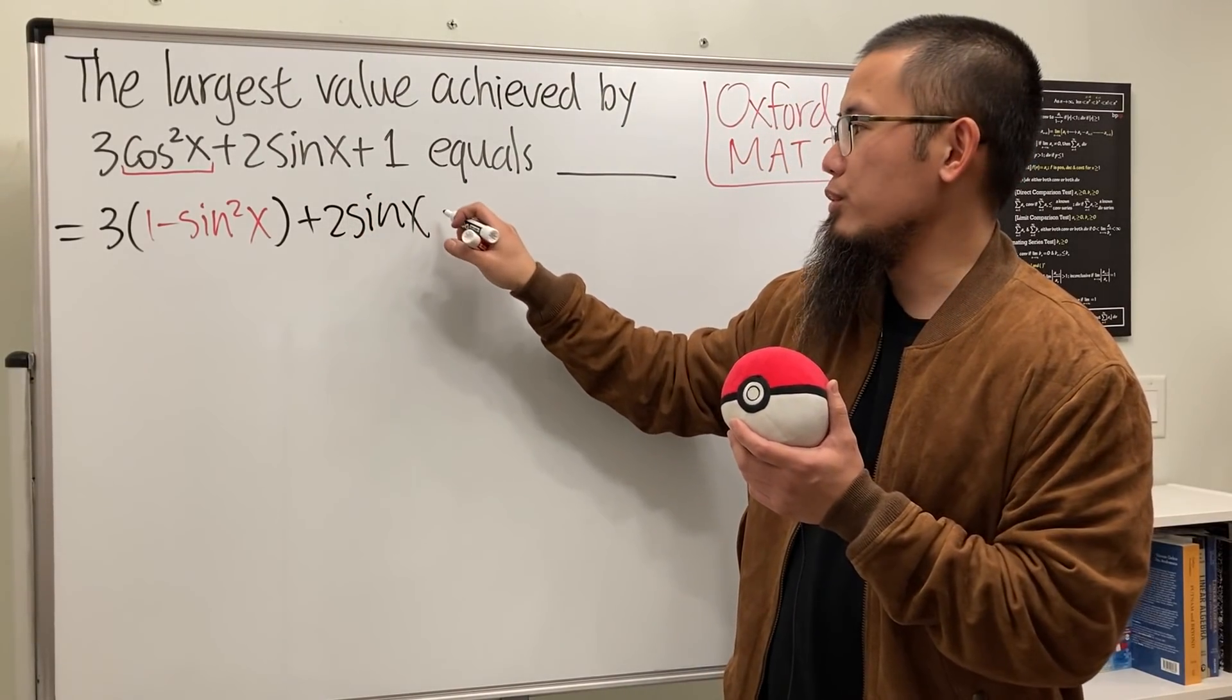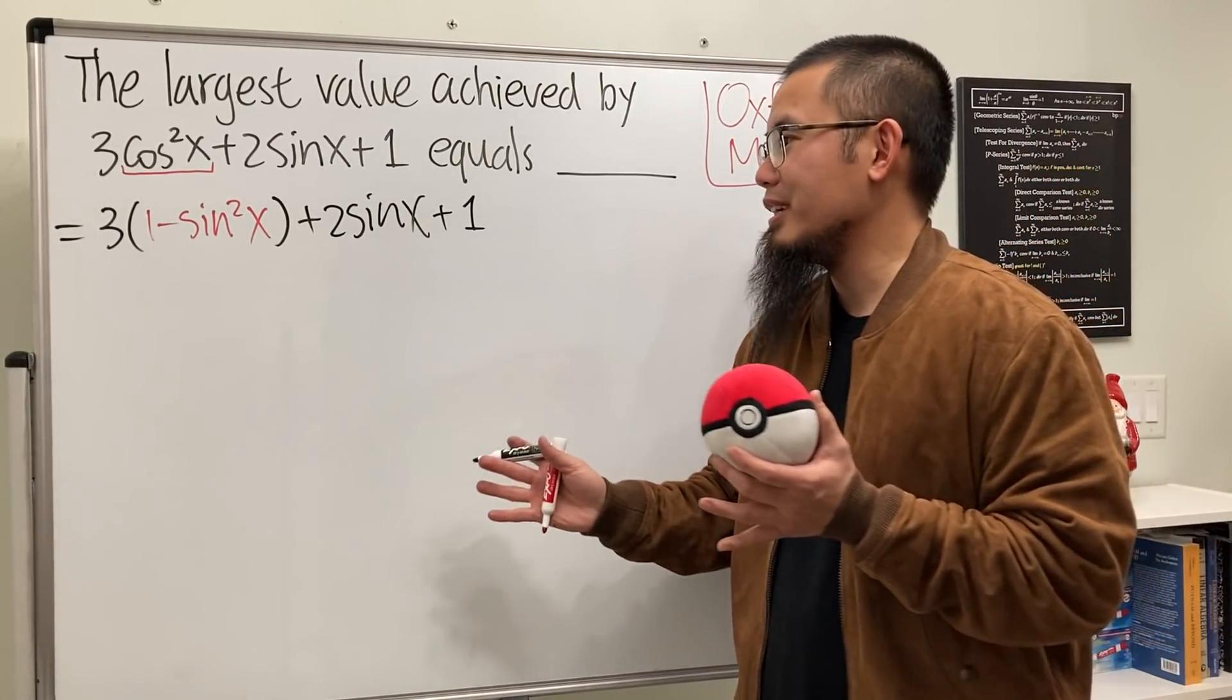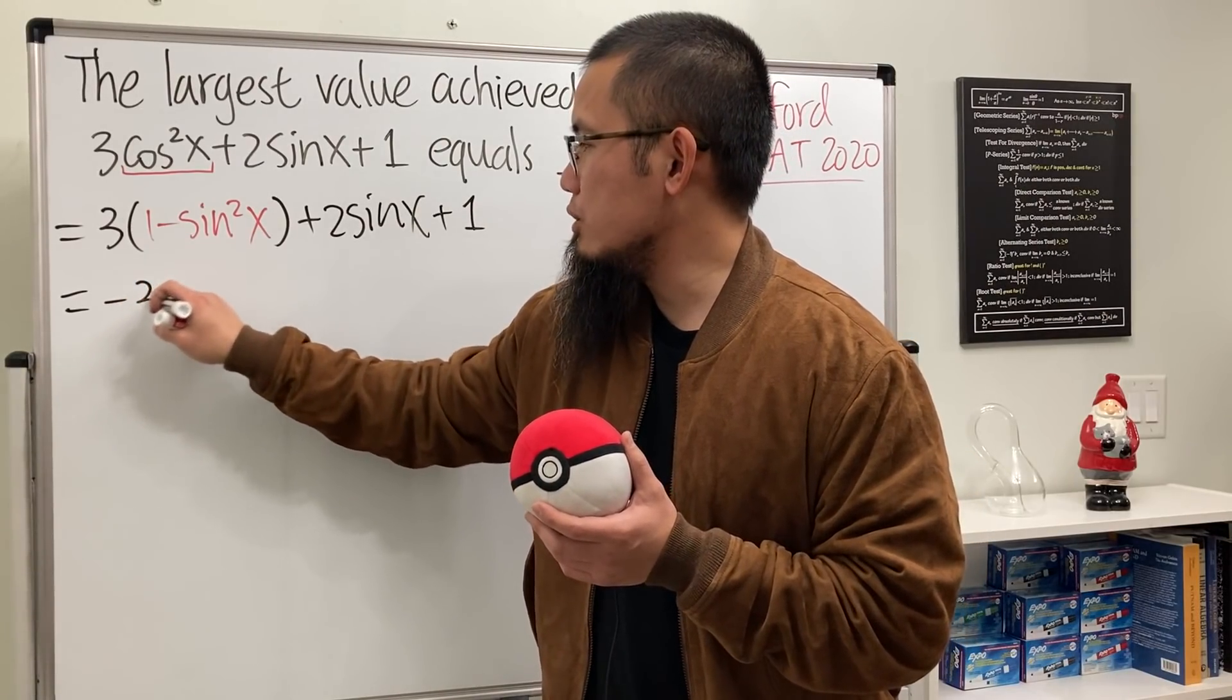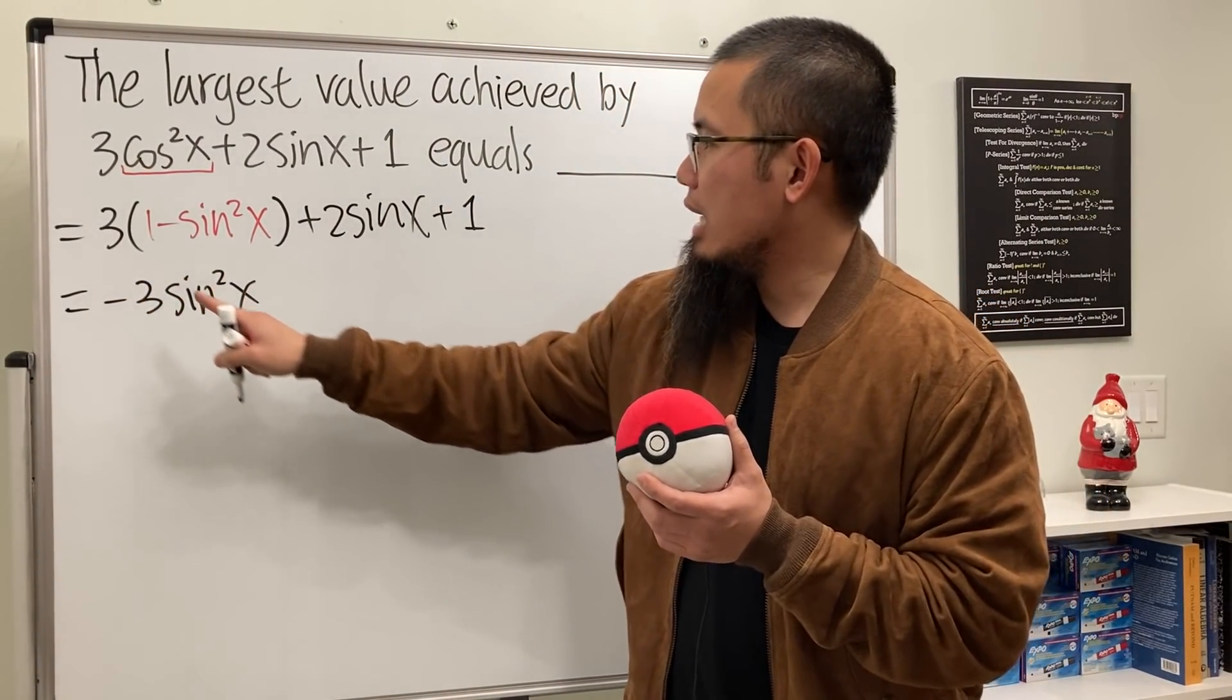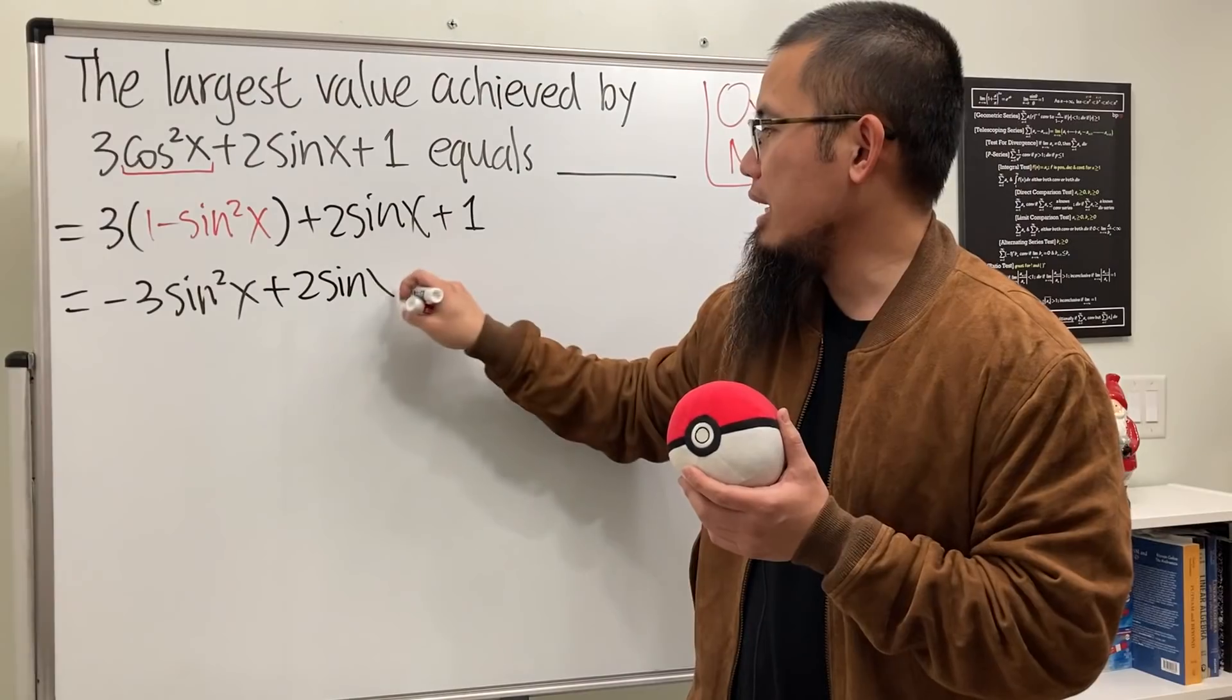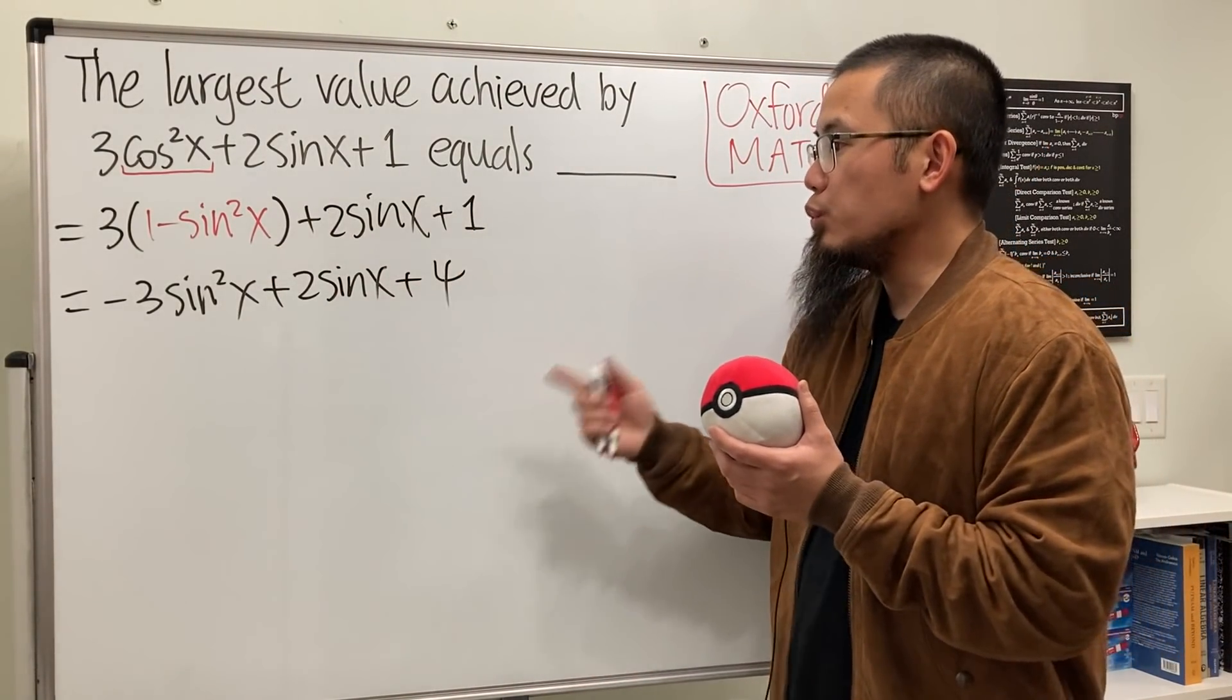Seriously, if you do this you don't have to do derivative. But if you want to do derivative I cannot stop you. Let me know how that goes. Anyway, let's clean things up. I will put this term first which is negative 3 sine squared x. Next we will have 3 times 1 is 3 plus 1 is 4, so I'll just put down plus 2 sine x and then plus 4.